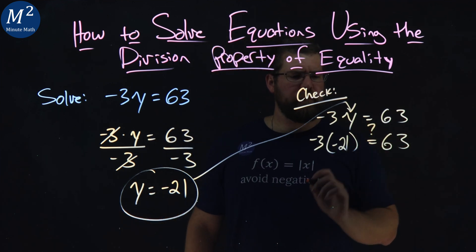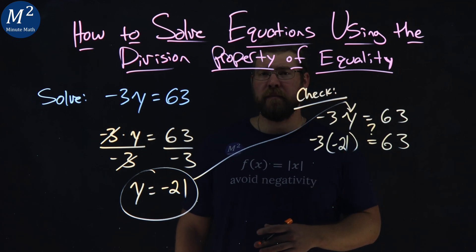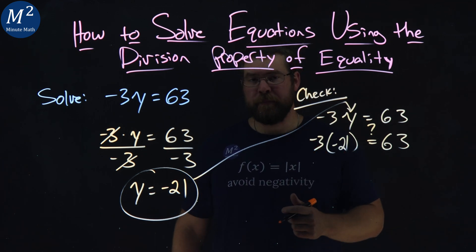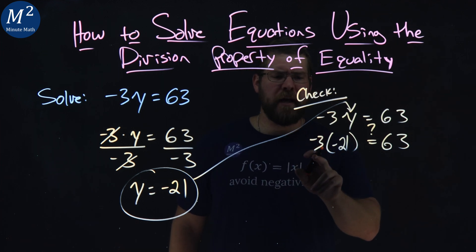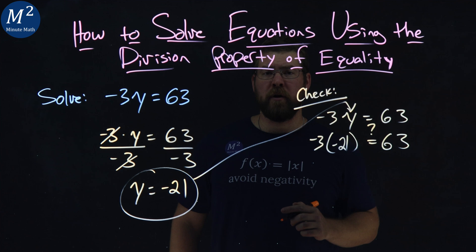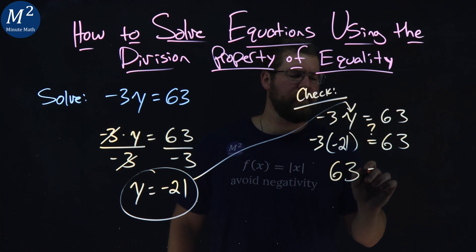Now, what we want to do is simplify the left and right-hand side, and if they're equal, we're good. Negative 3 times a negative 21, well, negative times a negative is a positive, got that. 3 times 21, 63. Is 63 equal to 63?